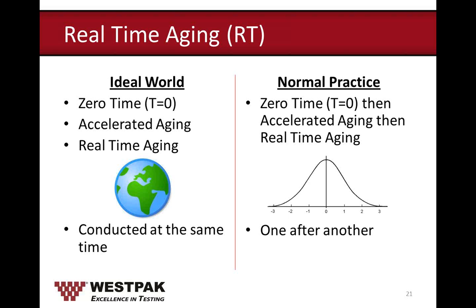It's already difficult for a customer to generate enough samples for zero-time testing, let alone provide additional samples for accelerated aging and real-time aging. Once they pass zero-time testing, they start accelerated aging but hold off on real-time aging until the first aging study is completed and passed. A handful of times, customers who passed zero-time testing have failed accelerated aging due to aggressive temperatures or temperatures not appropriate for their materials.